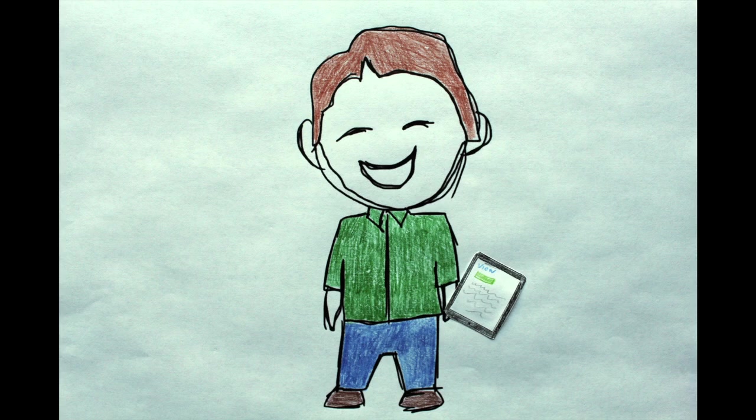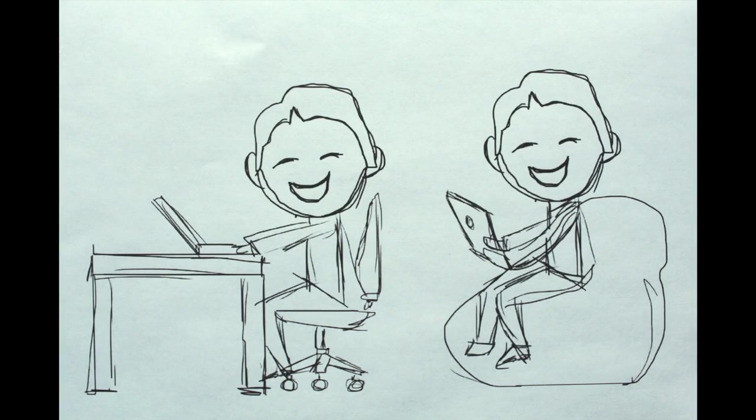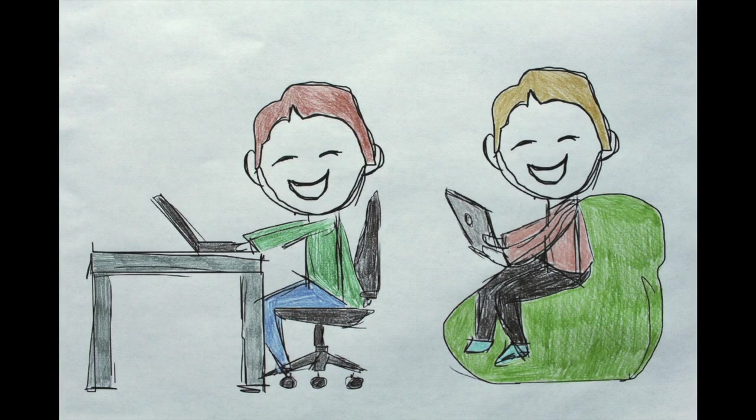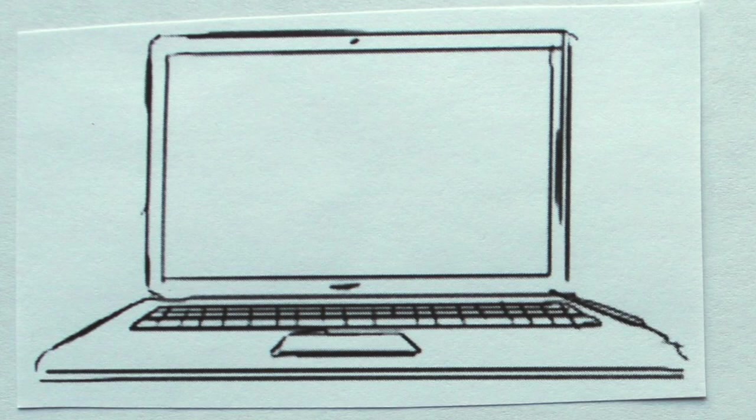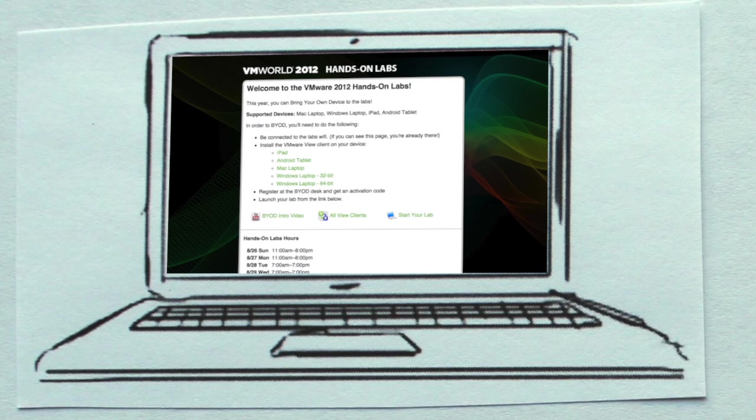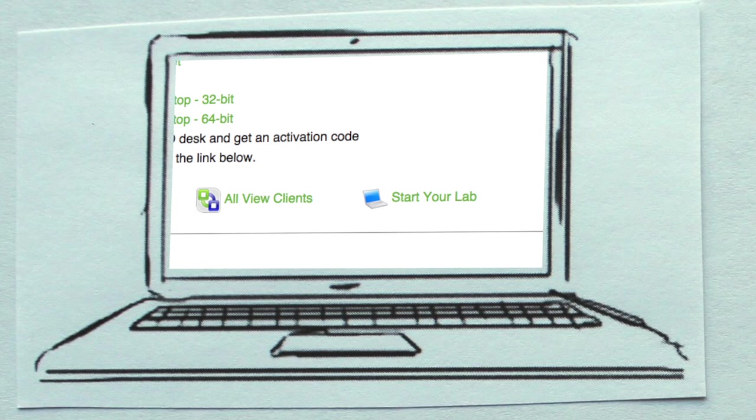After registration, your name will be called in the green room. When your name is called, find a seat in the Bring Your Own Device seating area. Open up a web browser. You will be redirected to the Bring Your Own Device launch page where you will be able to start your lab. If you haven't installed the VMware View Client yet, you can do so from this page. You'll need the activation code here in order to begin a lab.